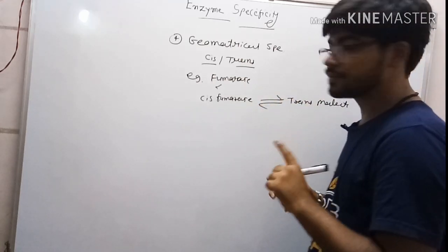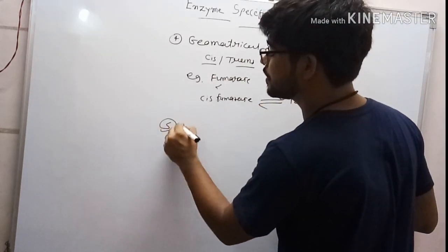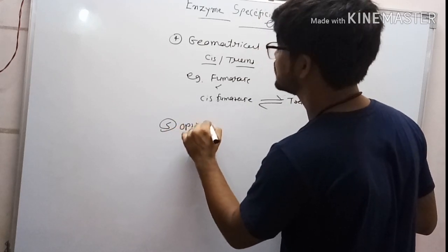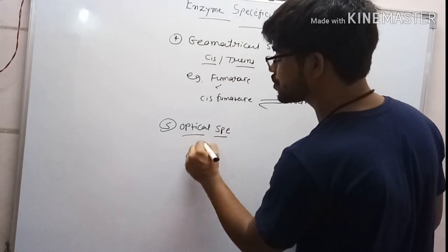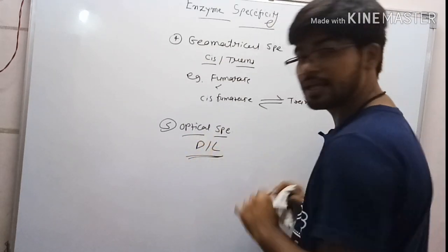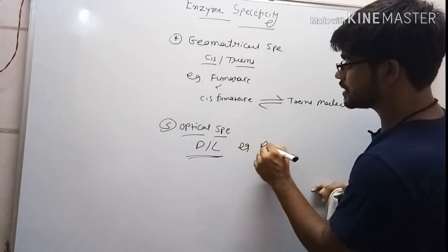The fifth one is optical specificity. This is based on the conformation, dextro and levo (D and L). The best example is racemase.